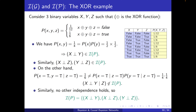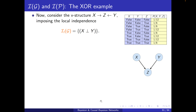Similarly, no other independence holds. There are not many possibilities; we can easily check them. Therefore IP will result in the set: X independent of Y, X independent of Z, Y independent of Z — each pair of variables is independent from each other, and nothing more.